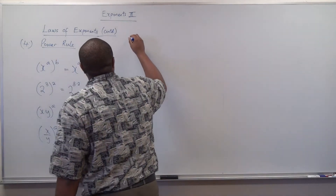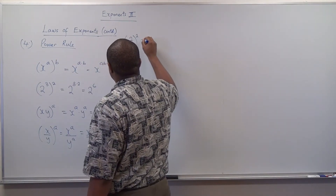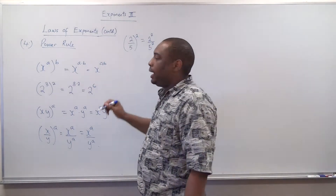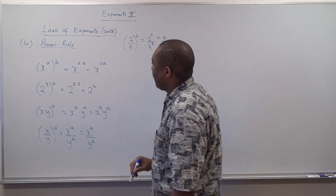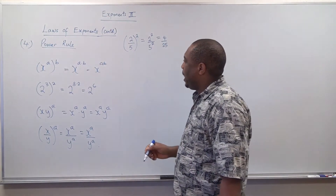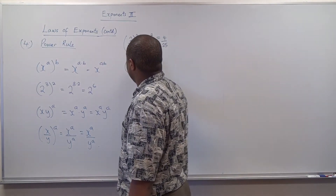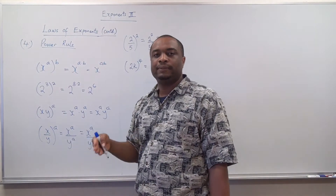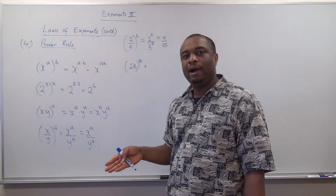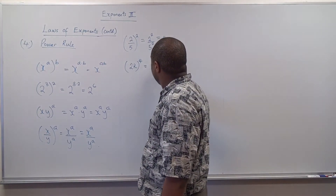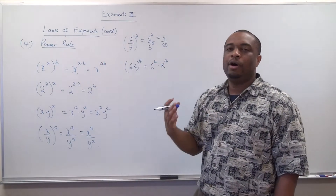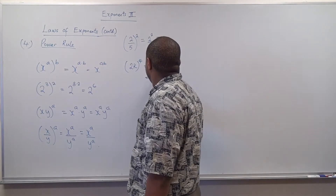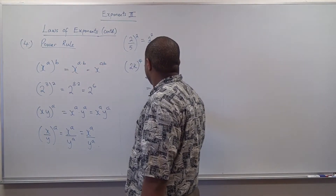For example, (2 over 5) raised to the second power means 2 raised to the second power all over 5 raised to the second power, which gives 4 over 25. Also, 2k raised to the fourth power — the same rule applies to constants and variables — means 2 raised to the fourth power times k raised to the fourth power, which is 16k raised to the fourth power.